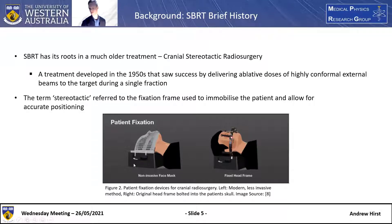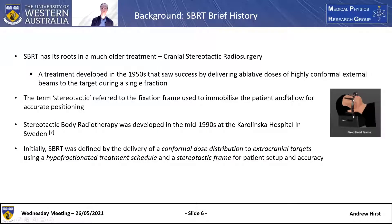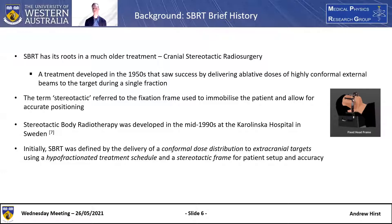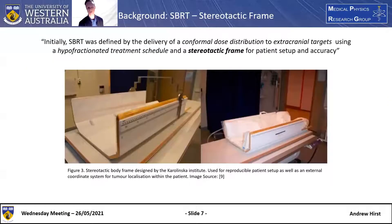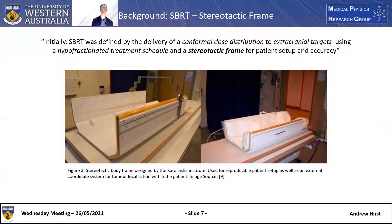Nowadays, a less invasive method is used with a thermoplastic mask. For stereotactic body radiotherapy, it was developed in the mid-1990s at the Karolinska Hospital in Sweden, and initially it was defined similarly to radiosurgery: by the delivery of a conformal dose distribution to extracranial targets using a hypofractionated treatment schedule and a stereotactic frame for patient setup and accuracy. The frame used in SBRT wasn't bolted into the patient. It had vacuum cushions within the frame to immobilize the patient during treatment, and it served as an external coordinate system for tumour localization within the patient.